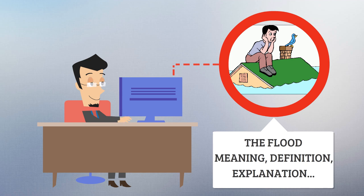Flooding may occur as an overflow of water from water bodies, such as river, lake, or ocean, in which the water overtops or breaks levees, resulting in some of that water escaping its usual boundaries.